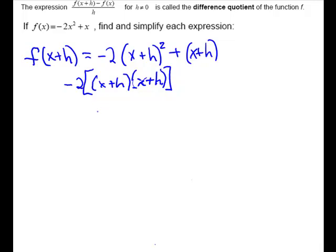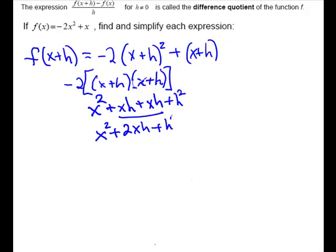So x times x is x squared. Outside, x times h is xh. Inside, hx or xh. And plus h squared. Combine your like terms here. So we have x squared plus 2xh plus h squared.